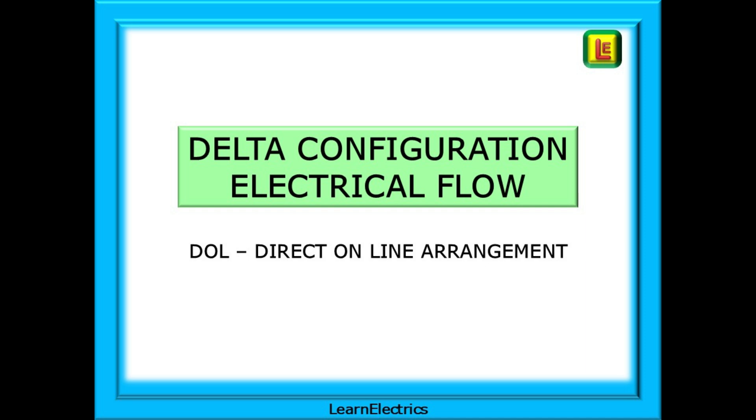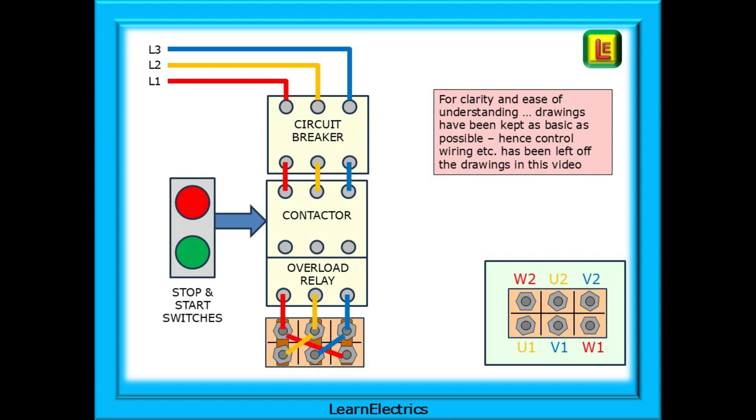Let's begin by looking at a direct online motor in a delta configuration. For clarity and ease of understanding, the drawings have been kept as basic as possible. Hence control wiring has been left off the drawings in this video. The supply will enter the circuit from the distribution board at L1, L2, and L3. We have a three-phase circuit breaker, a contactor, and an overload relay before the power arrives at the motor block. There will be appropriate control wiring and a stop start switch box.